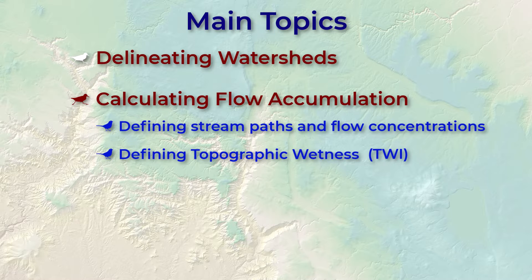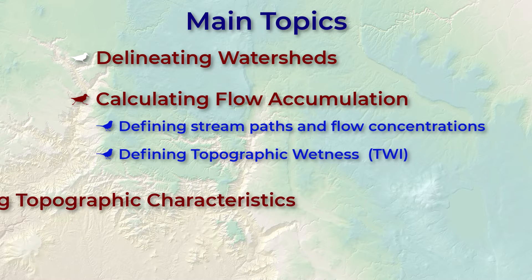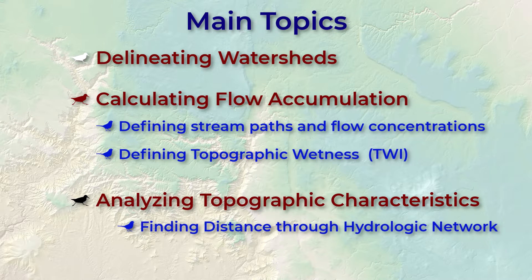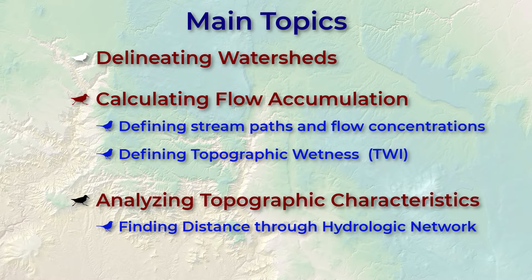TWI is an interesting way to describe the landscape, so I'm going to go into some more details on it shortly. Finally, we're going to apply some tools we've used before to calculate slope and aspect statistics within the watershed, and we'll also take a look at how to find the distance through the hydrologic network.